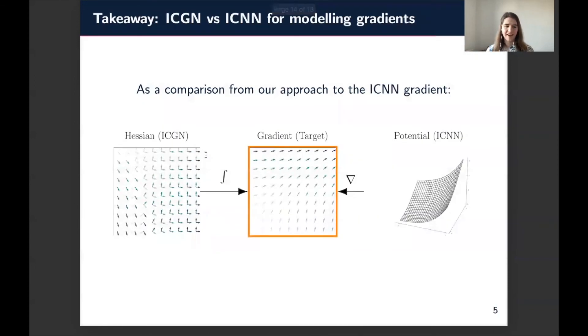So to wrap up, here's kind of the high-level picture overview, and the way I like to think of this is that the existing approach basically works by modeling this potential function, so we model a surface here, and then taking a spatial gradient to compute the gradient vector field. But by contrast to that, our work with the input convex gradient networks works by modeling the Hessian, and then integrating that Hessian in order to compute a vector field.